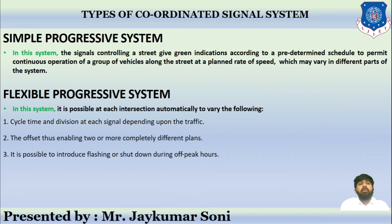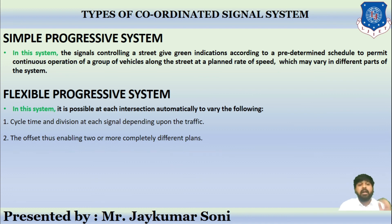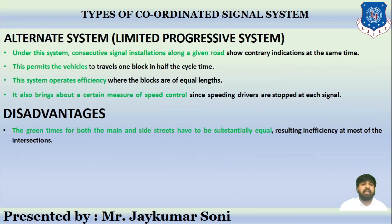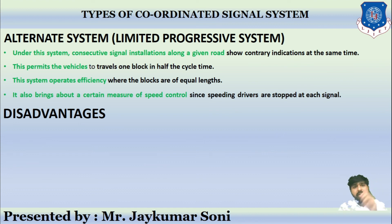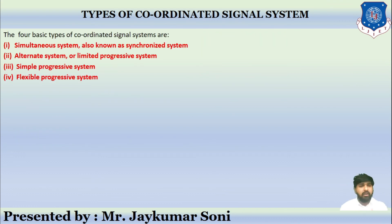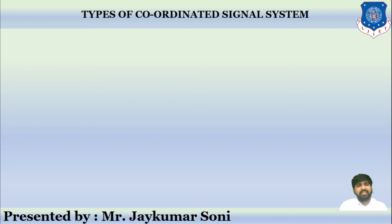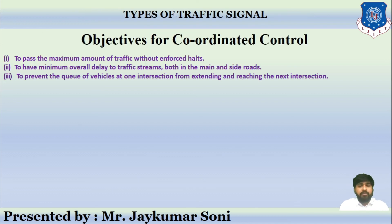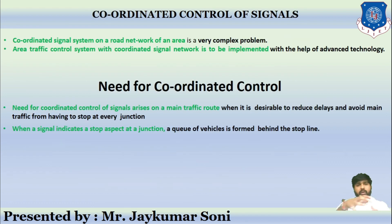To summarize, we have discussed the simple progressive system, flexible progressive system, the alternate or limited progressive system and its disadvantages, and the simultaneous or synchronized system. There are four basic types of coordinated signals: simultaneous or synchronized, alternate or limited progressive, simple progressive, and flexible progressive. We have also covered the objectives of coordinated signals and what coordinated signal control is and why it is needed. I hope you understood the concept thoroughly.